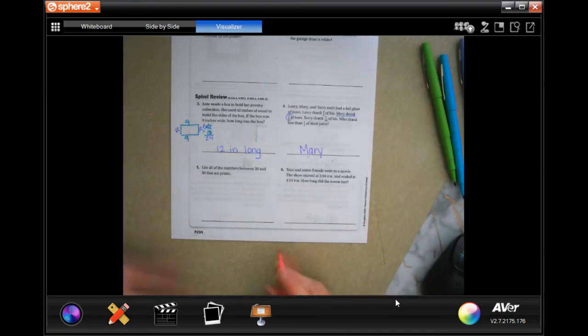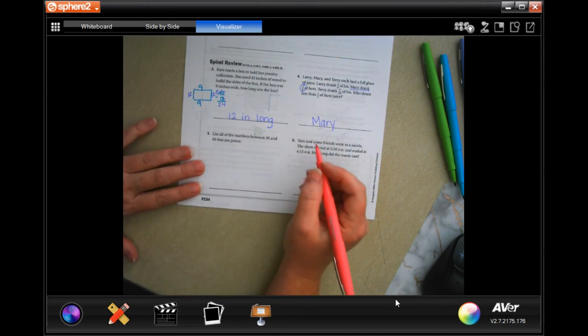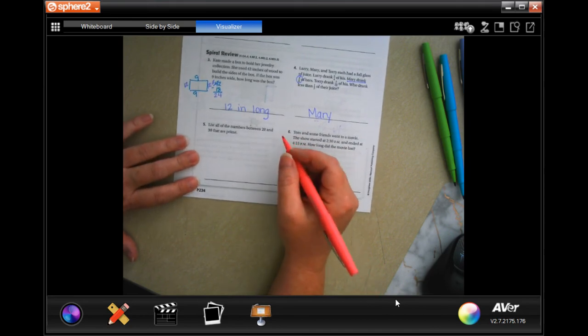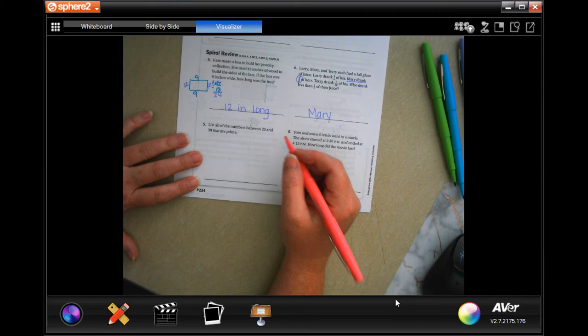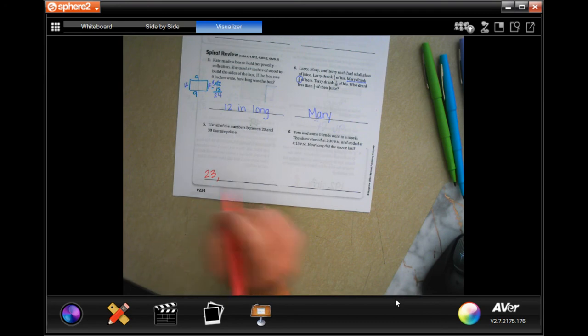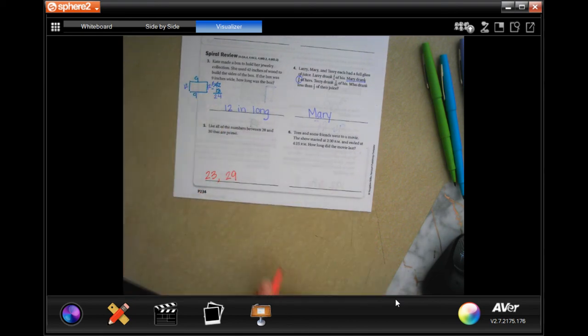There we go. List all the numbers between 20 and 30 that are primes. Well, it's not going to be 20. 21 has 7 and 3 that go into it. 22 has 11 and 2. 23 doesn't have anything. 24 has 8, has 6, has 4, has all of those. 25 is a multiple of 5. 26 has 13 that goes into it. 27 has 9 that goes into it. 28 is an even number, so that's automatically out. And 29 has nothing.